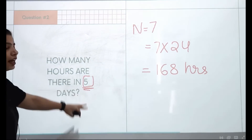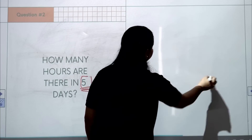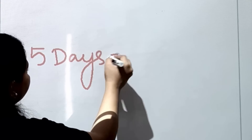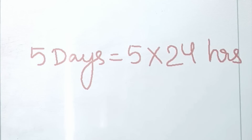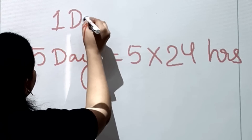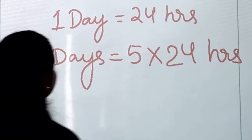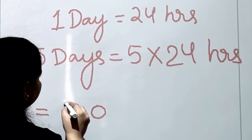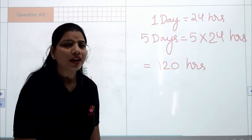Question number two: how many hours are there in five days? One day equals 24 hours, so five days equals five times 24 hours. Five times four is 20, five times two is 10, plus 2 gives 12 — that's 120 hours. There are 120 hours in five days.